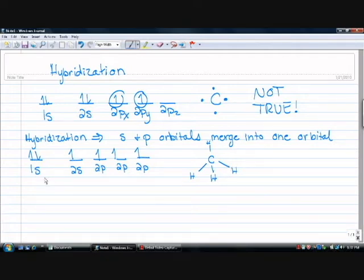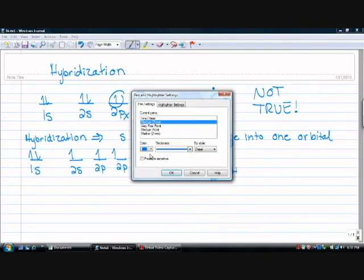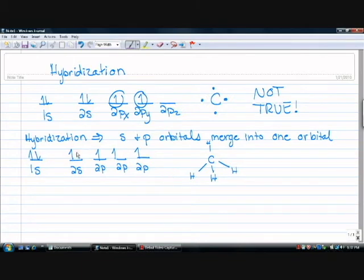Each hydrogen will come in and donate one of these purple electrons to the configuration, which will then give you your full valence and octet rule satisfied, everything you need.